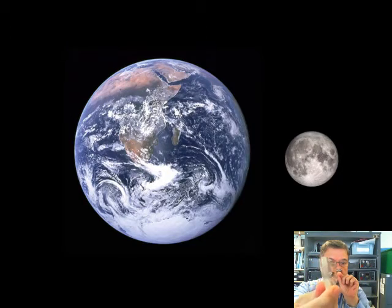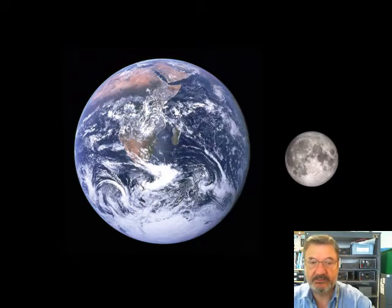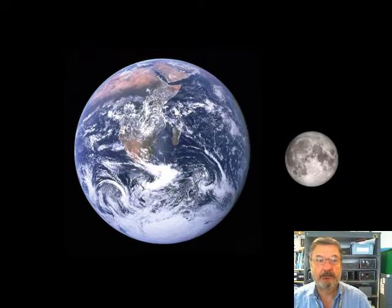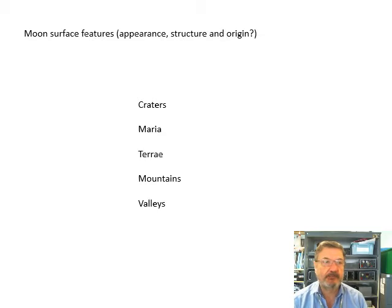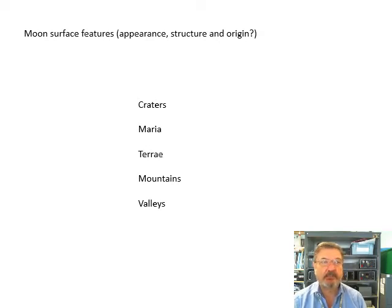An eclipse! Right, I'm just messing about. Moon surface features — features that we can see. What can we see? Craters, maria, terre, mountains, valleys. What do they look like? What is their structure? What is their origin? Let's go through it.